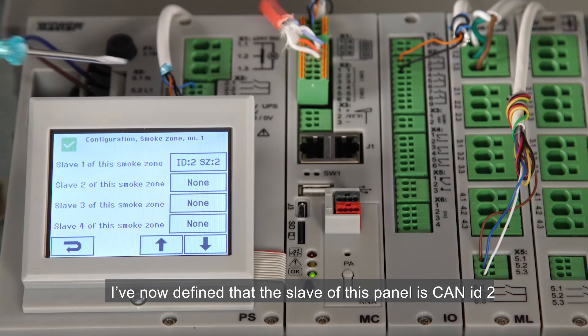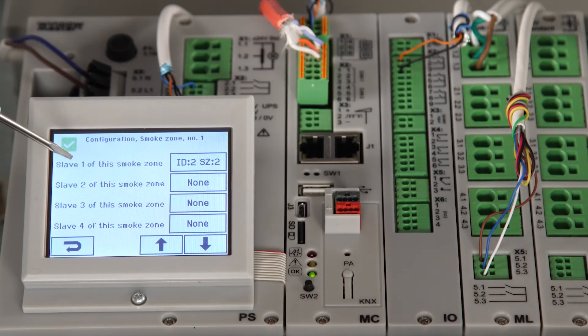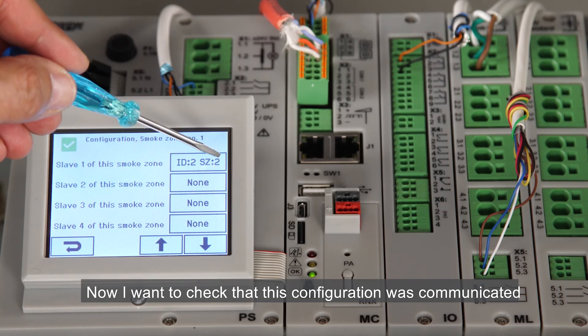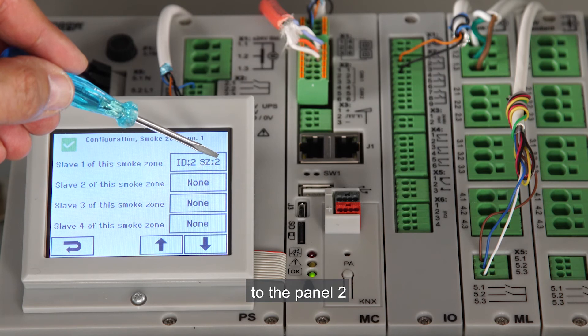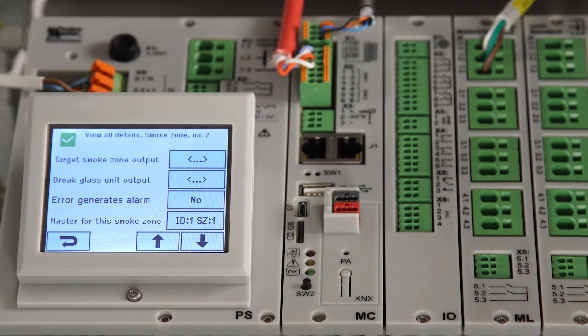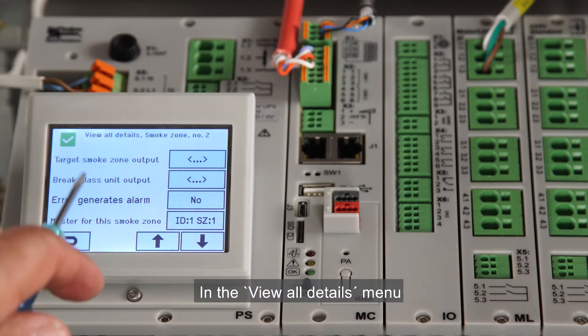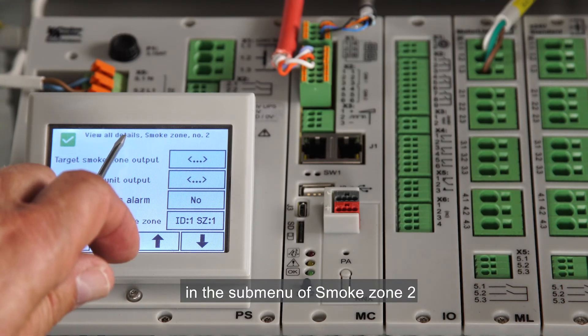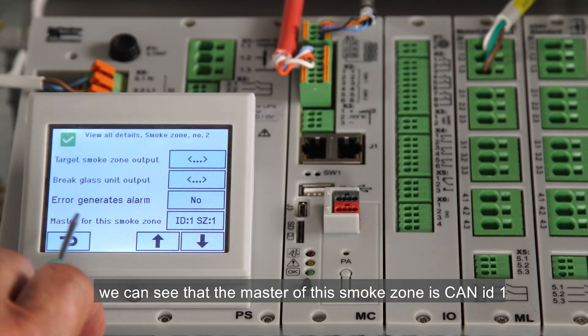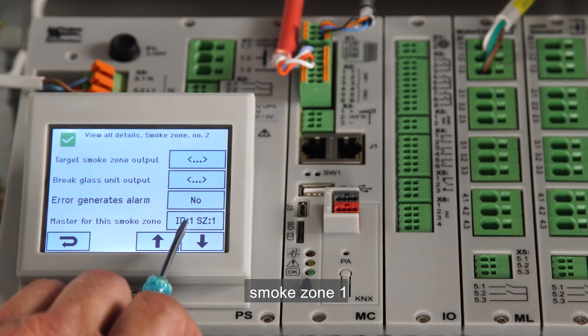I've now defined that the slave of this panel is CAN ID 2, smoke zone 2. Now I want to check that this configuration was communicated to panel 2. In the view all details menu in the submenu of smoke zone 2, we can see that the master of this smoke zone is CAN ID 1, smoke zone 1.